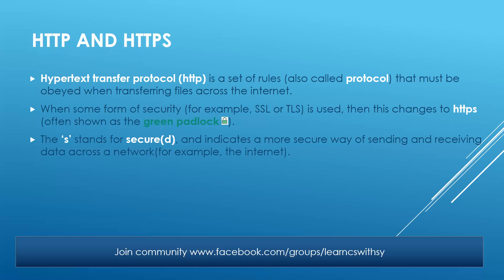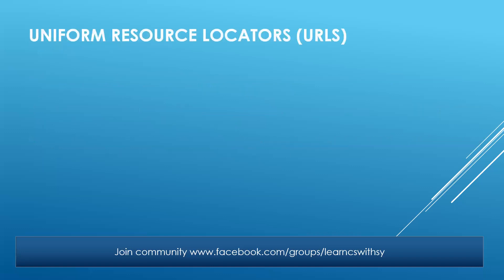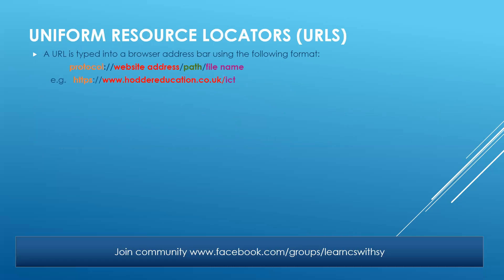A URL is a website address. When you type a URL, it typically consists of: first, the protocol (such as HTTPS), followed by a colon and two slashes; then the website address; then the path through which the file is searched; and finally the file name. For example, www.hardereducation.co.uk is the website address, the path is the default location or drive, and the file name is 'ict'.